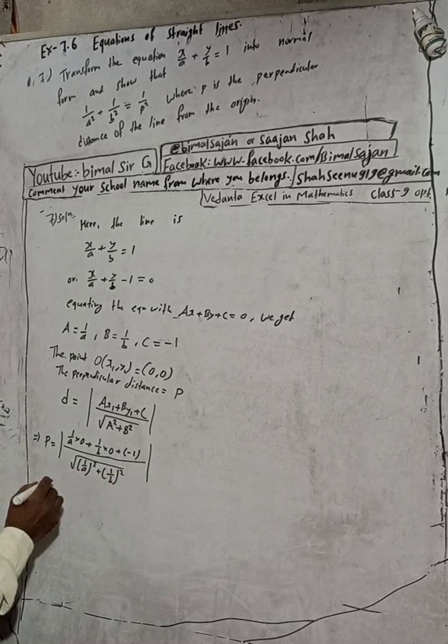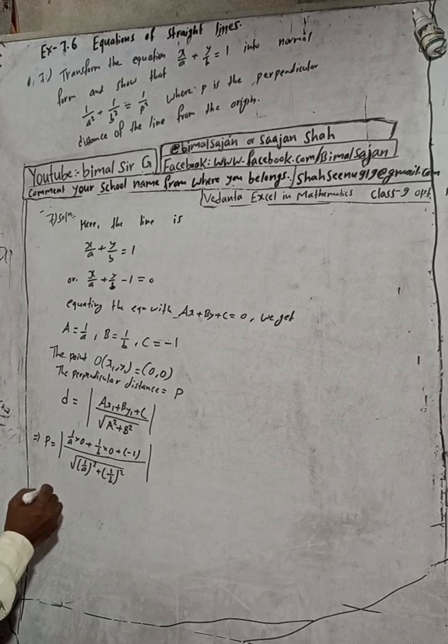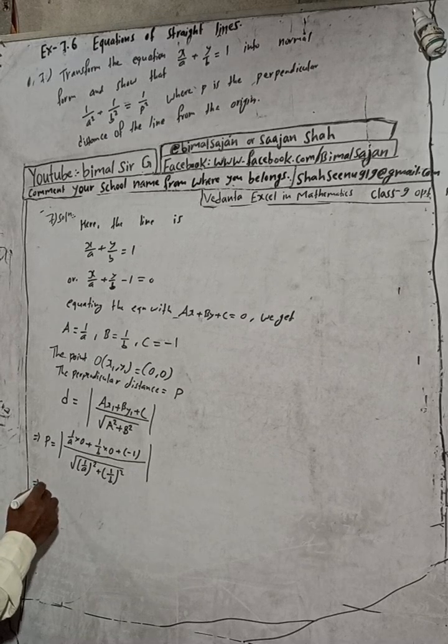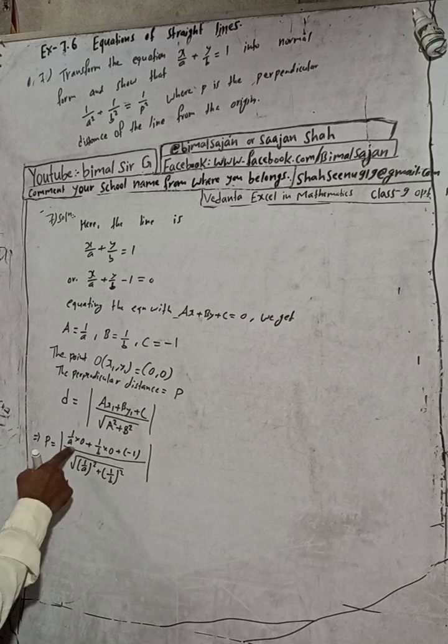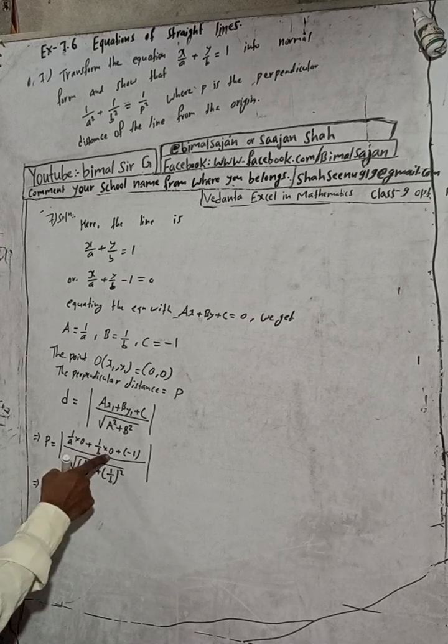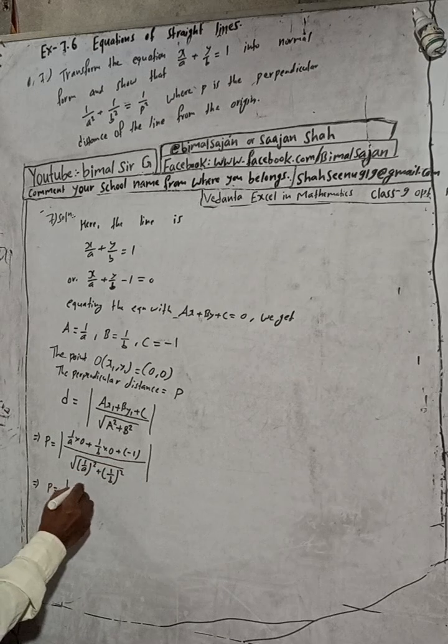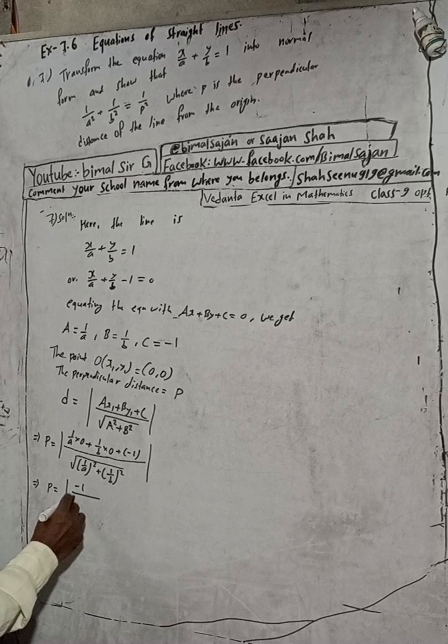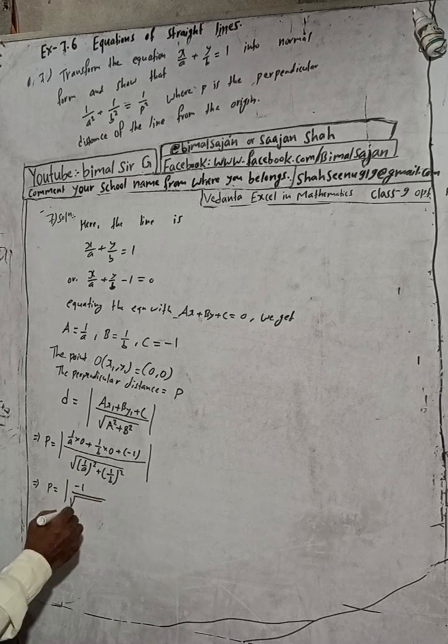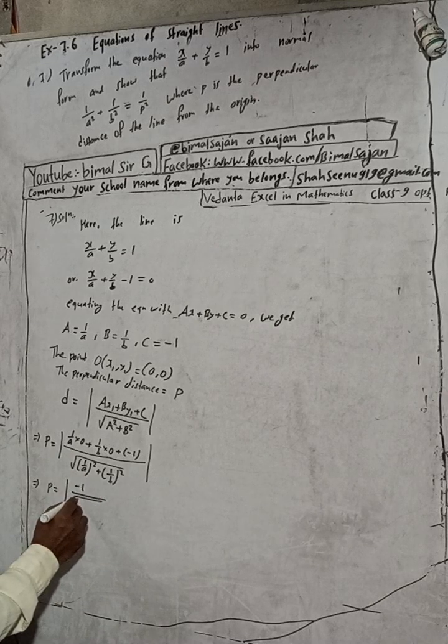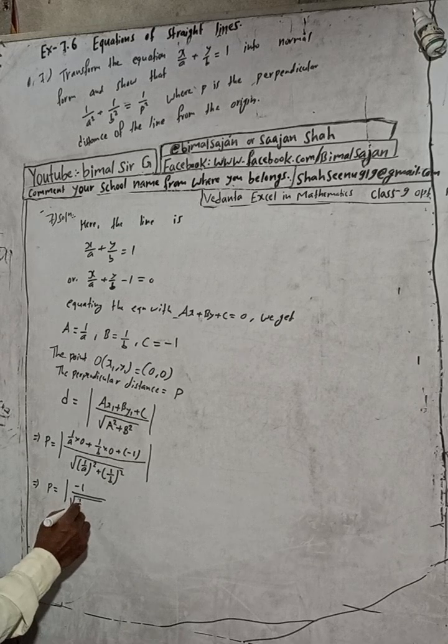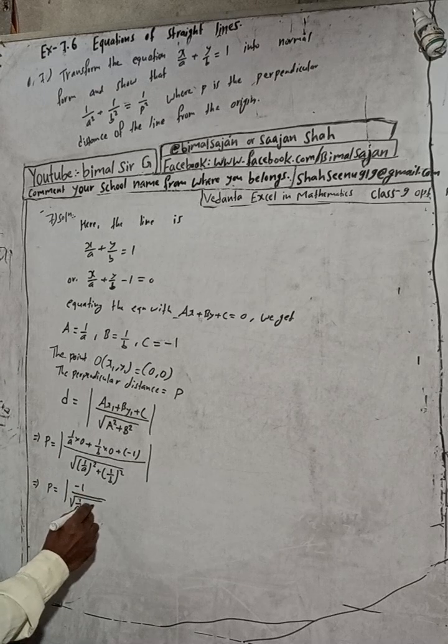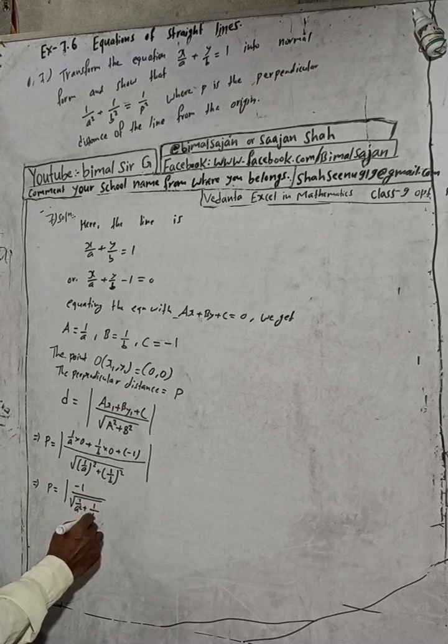Now I will do one more step here. This implies p equals, so here this into 0 is 0, this also 0, this is minus 1, so this here is minus 1 by root under 1/a² plus 1/b².